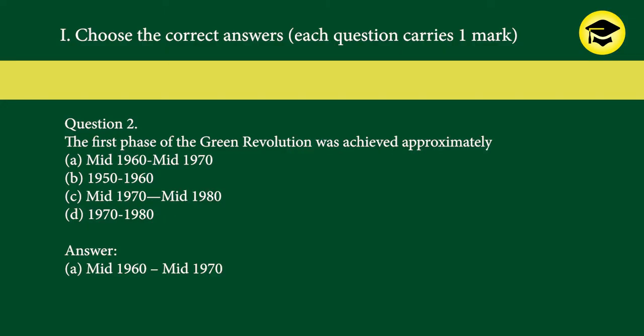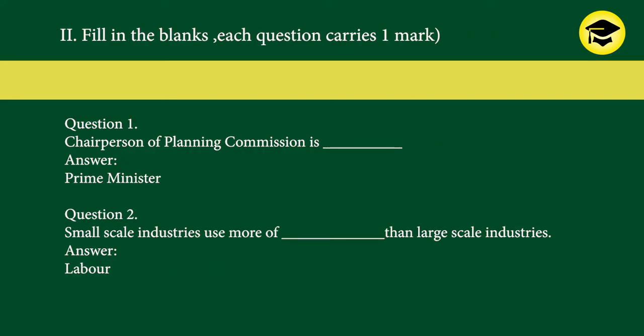Question 2: The first phase of the green revolution was achieved approximately — A) mid-1960 to mid-1970, B) 1950 to 1960, C) mid-1970 to mid-1980, D) 1970 to 1980. Answer: A) mid-1960 to mid-1970.